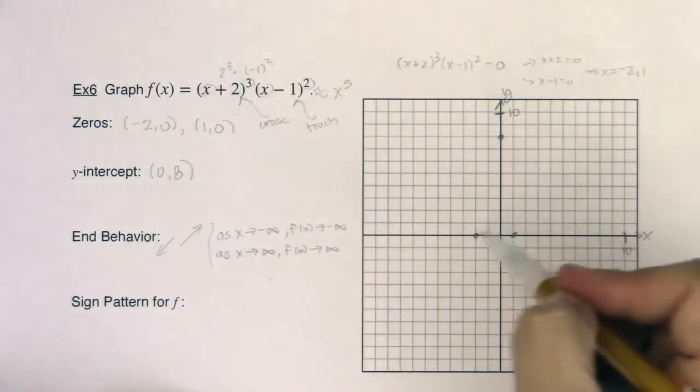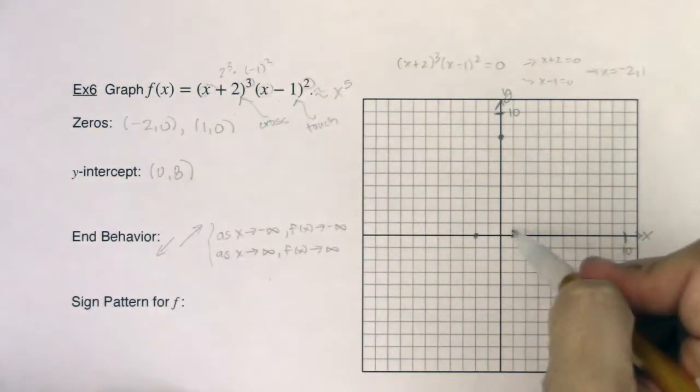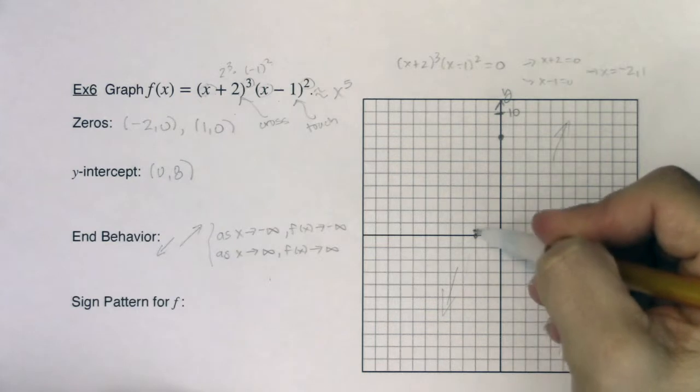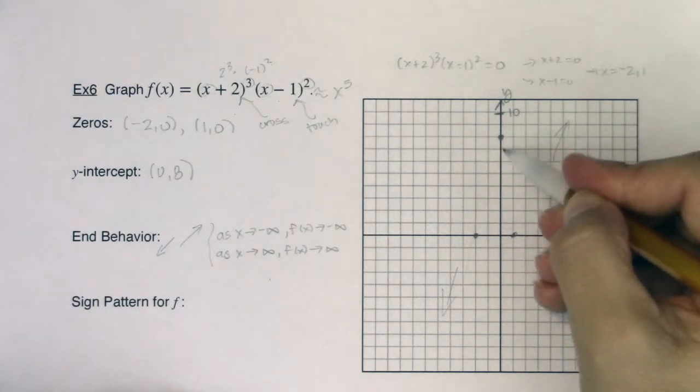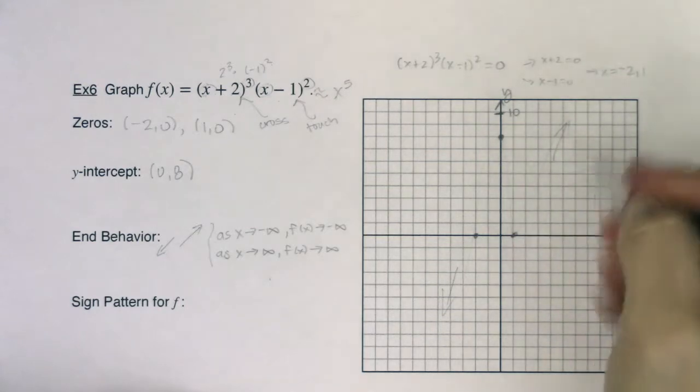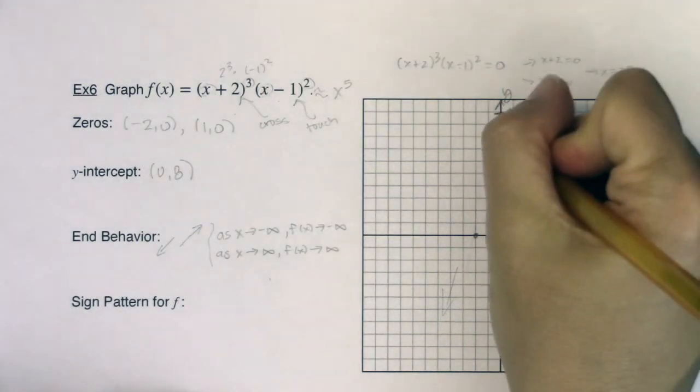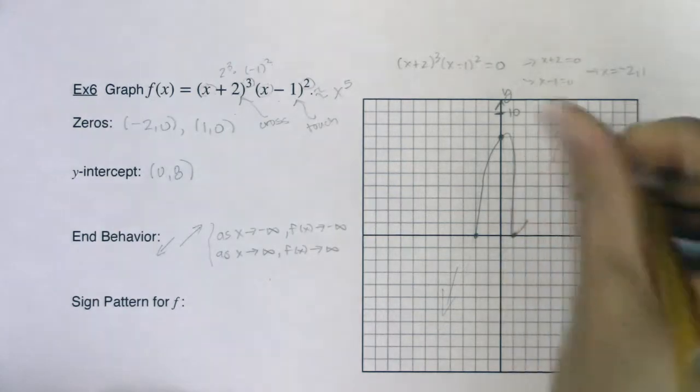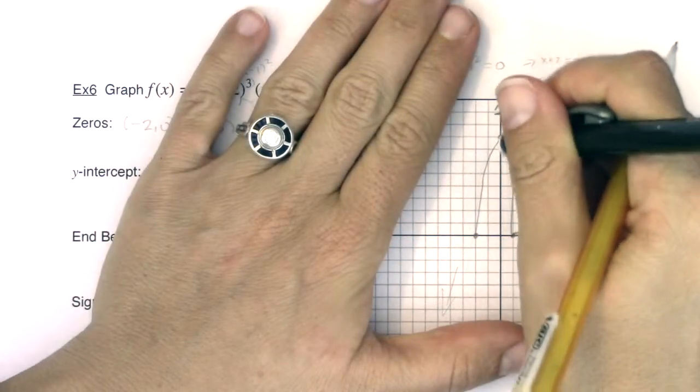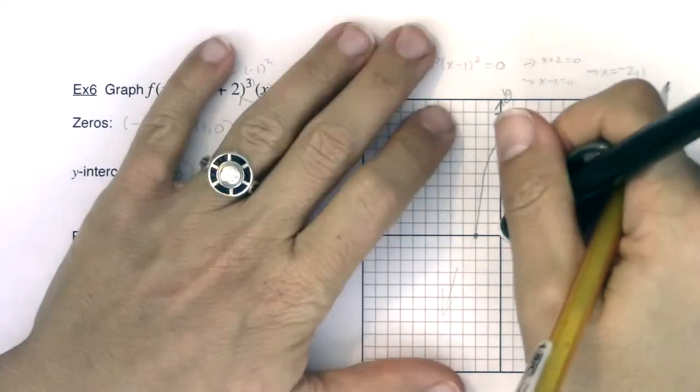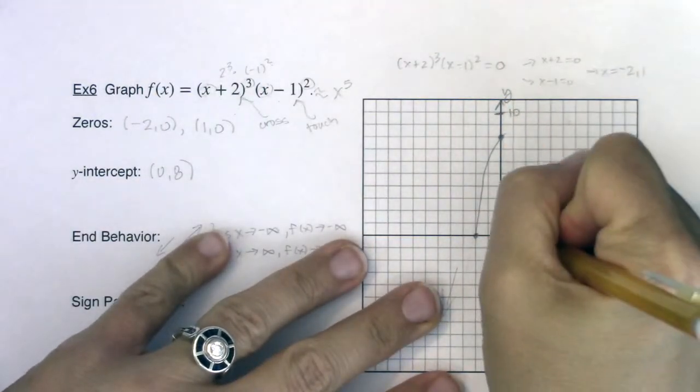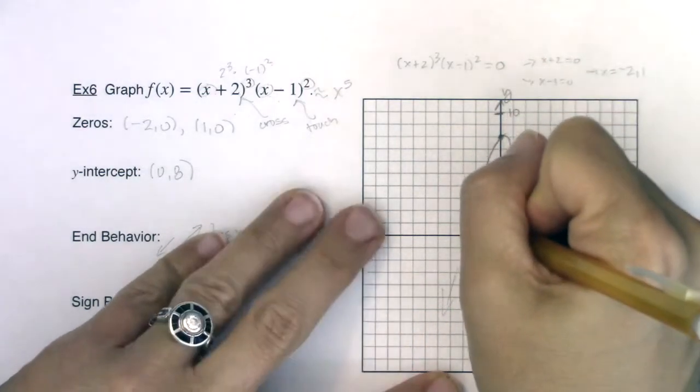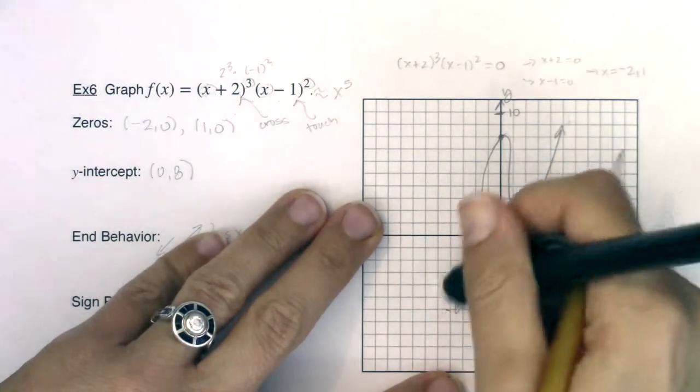So as I'm thinking about this, I know I want to cross here, and I want to touch here, but my end behavior, I'm down here and up here. So I must cross through, head up, come down, and touch. Something like that. That's roughly what my graph looks like. So I'm going to just sketch that in. Oh, that is a sharp turn. I'm not sure I actually did that the best I could. And it's going to come through. Something to that effect.